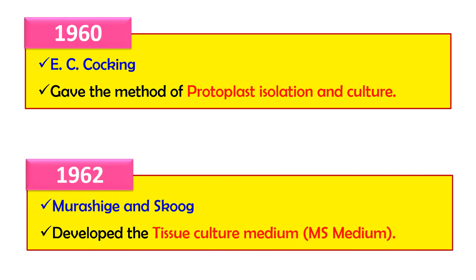In 1962, Murashige and Skoog developed the medium known as MS media — the Murashige and Skoog media. It is the widely used basic medium in plant tissue culture, providing basic nutrients for the growth of plants under culture conditions.